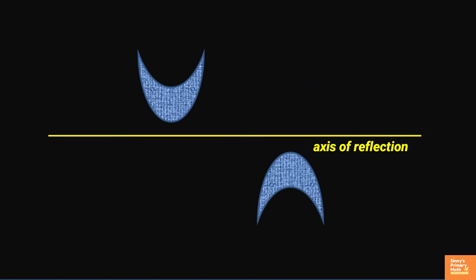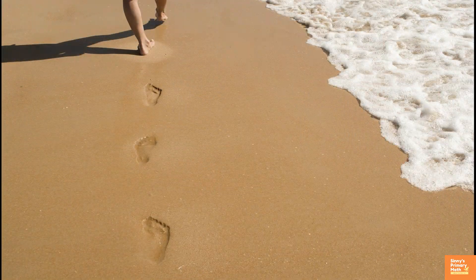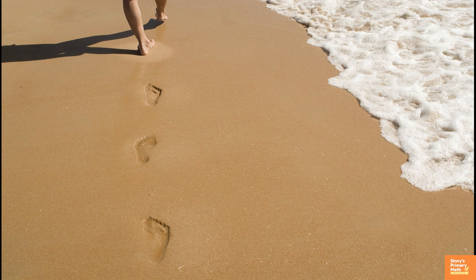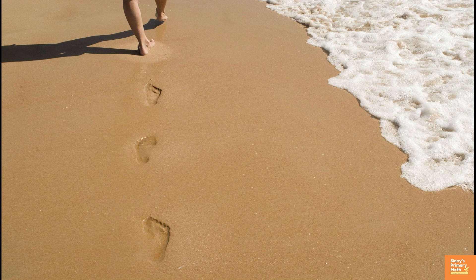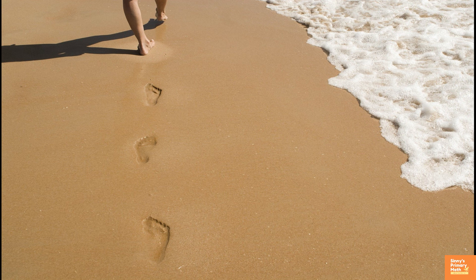In this, the axis of reflection must be parallel to the direction of translation. The footprints trail on beach sand are a classic example of a glide reflection. Right and left footprints are images of each other under the combined effects of a reflection and a translation.